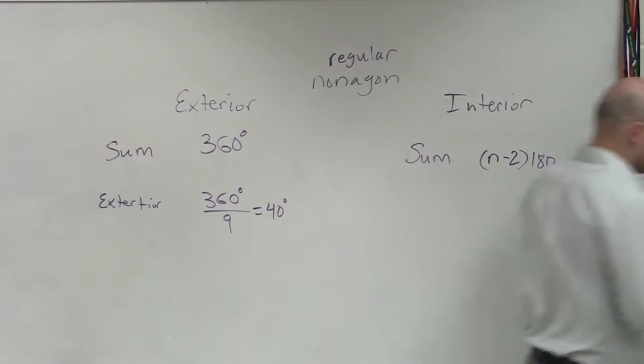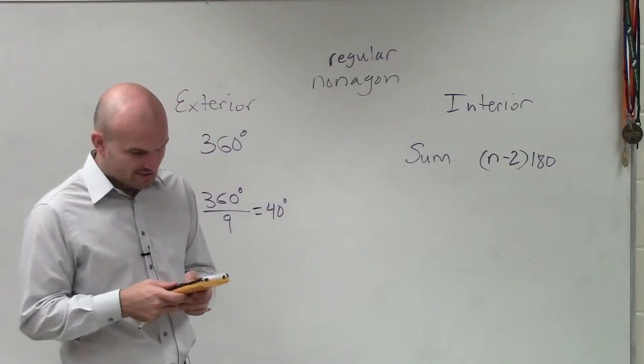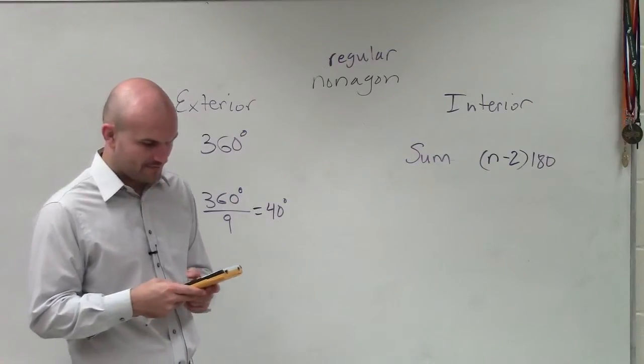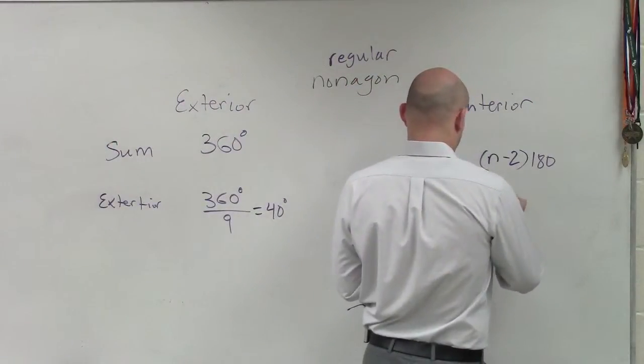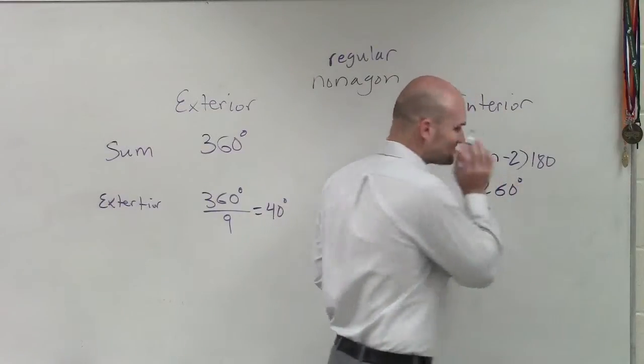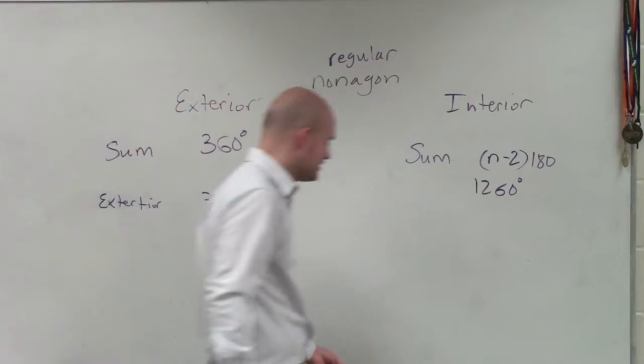All right, I'm just going to do this because I can't think of it in my head right now. So seven times 180. 1,260, Taylor. I know, I'm joking with you. So you have 1,260. That's the sum of all the interior angles.